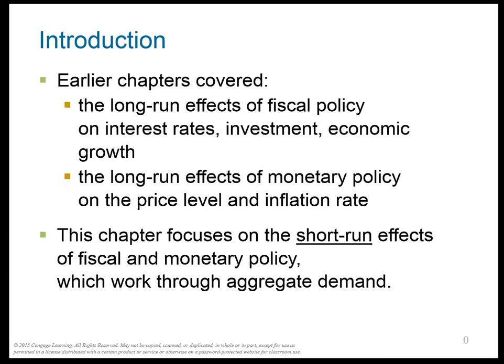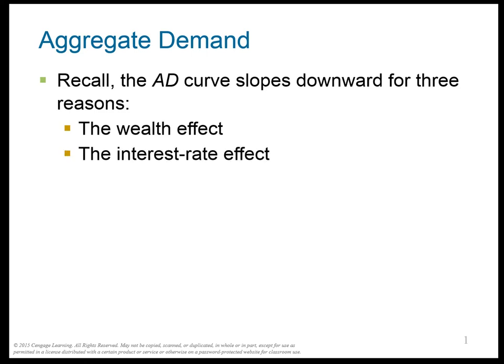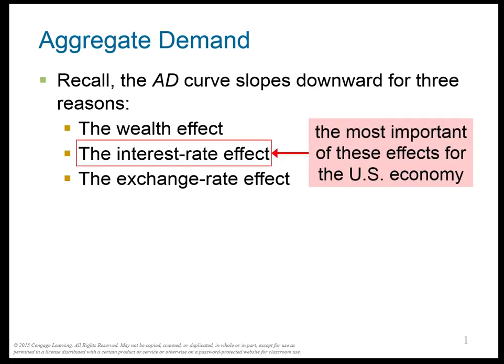So what can the government do in the short run working through aggregate demand? Remember, aggregate demand slopes downward for three reasons: the wealth effect — price goes up, consumption goes down; the interest rate effect — price goes up, investment goes down; and the exchange rate effect — price goes up, net exports goes down.